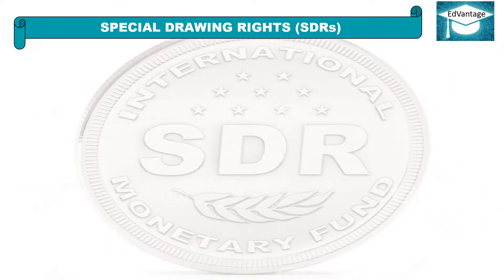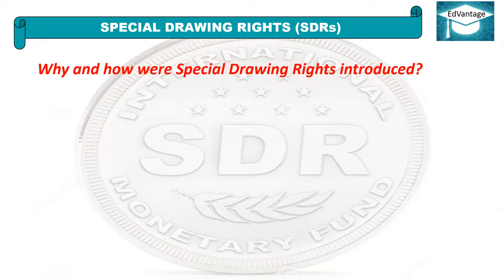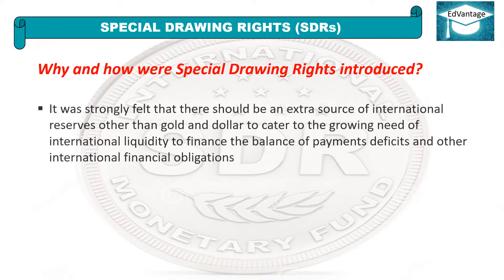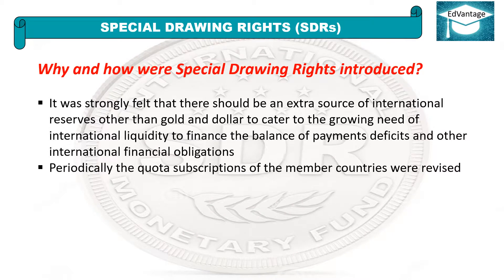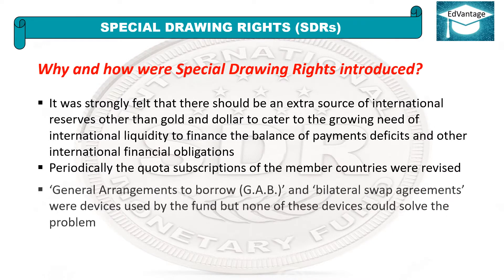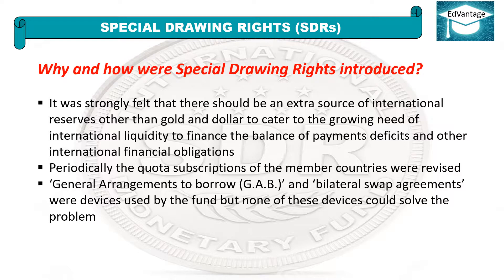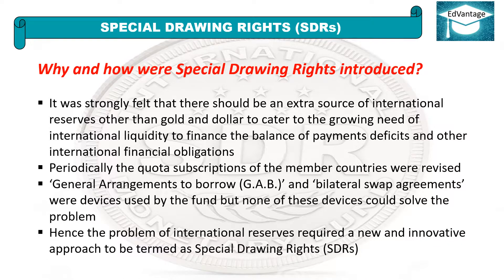Special Drawing Rights (SDRs) — Why and how were SDRs introduced? It was strongly felt that there should be an extra source of international reserves other than gold and dollar to cater to the growing need of international liquidity to finance balance of payments deficits and other international financial obligations. Periodically, quota subscriptions of member countries were revised. General Arrangements to Borrow (GAB) and bilateral swap agreements were devices used by the fund, but none could solve the problem. Hence, the problem required a new and innovative approach termed Special Drawing Rights.